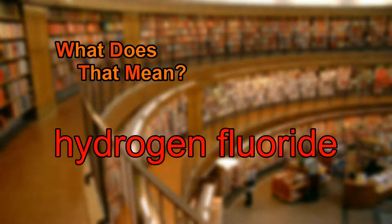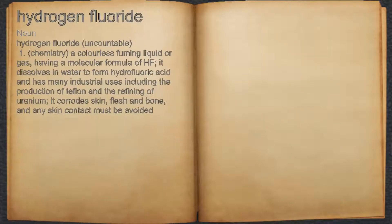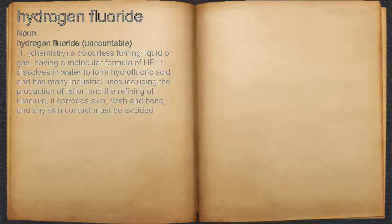What does hydrogen fluoride mean? Hydrogen fluoride. Noun. 1. A colorless fuming liquid or gas, having a molecular formula of HF, it dissolves in water to form hydrofluoric acid and has many industrial uses including the production of Teflon and the refining of uranium.